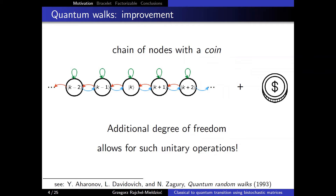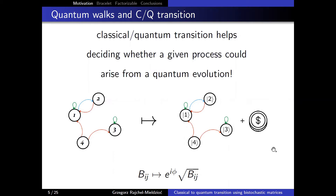The problem of finding a unitary matrix given a bistochastic matrix can also be stated as finding a quantum counterpart to a classical walk on a graph. Given a bistochastic matrix describing a classical problem, we would like to find a unitary matrix — given by the square root of elements plus some phase — to describe a quantum process. The problem is motivated by these walks.